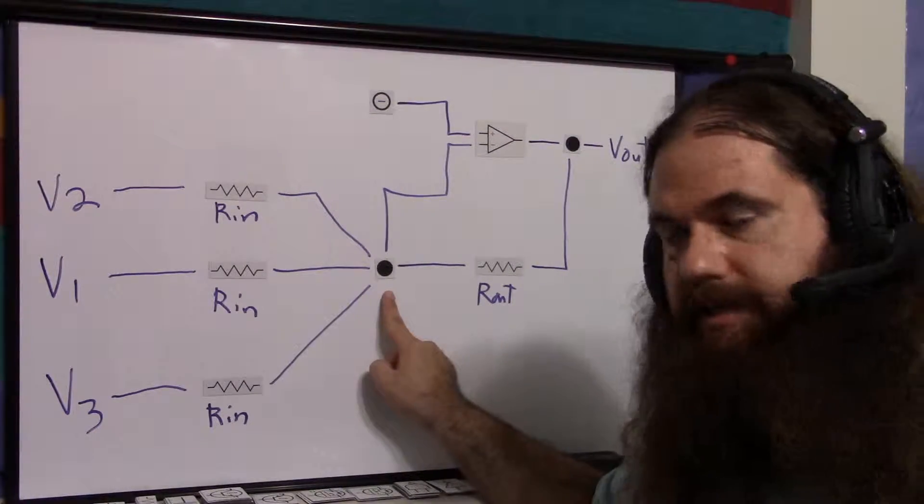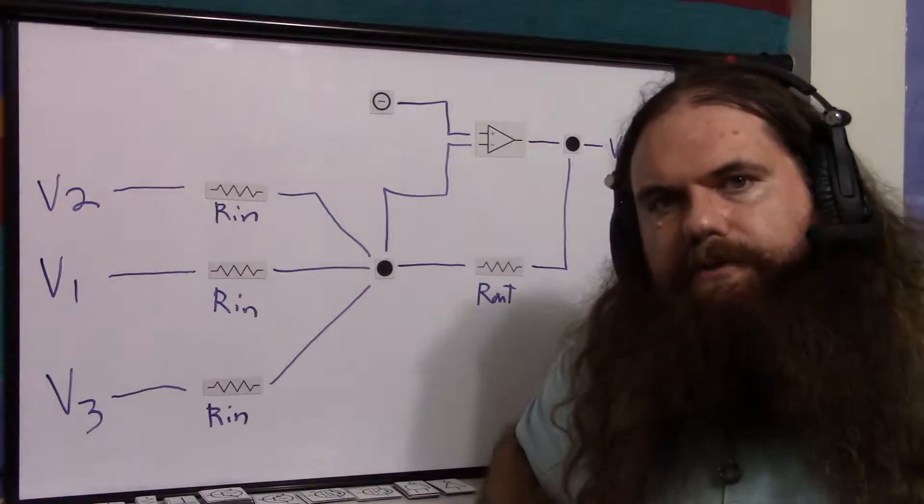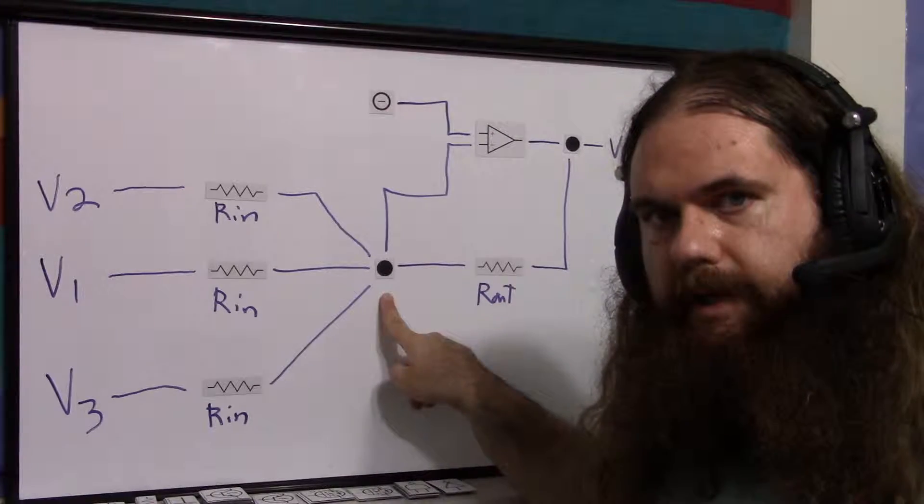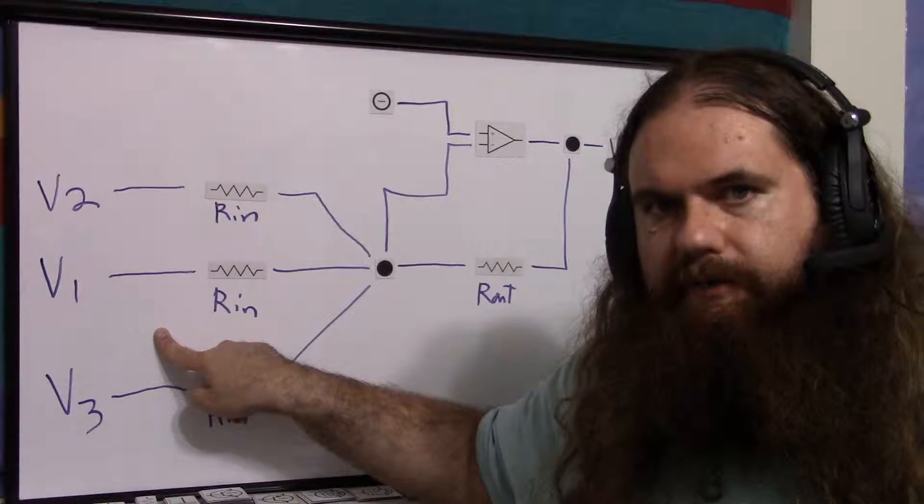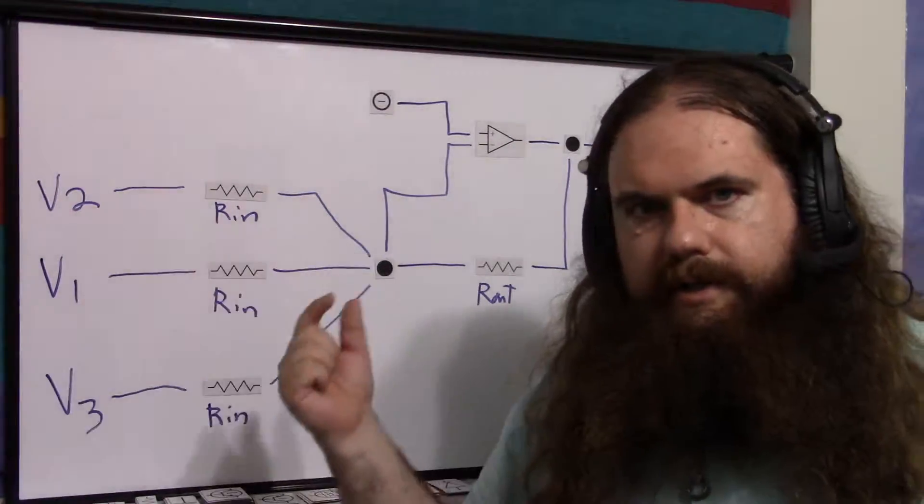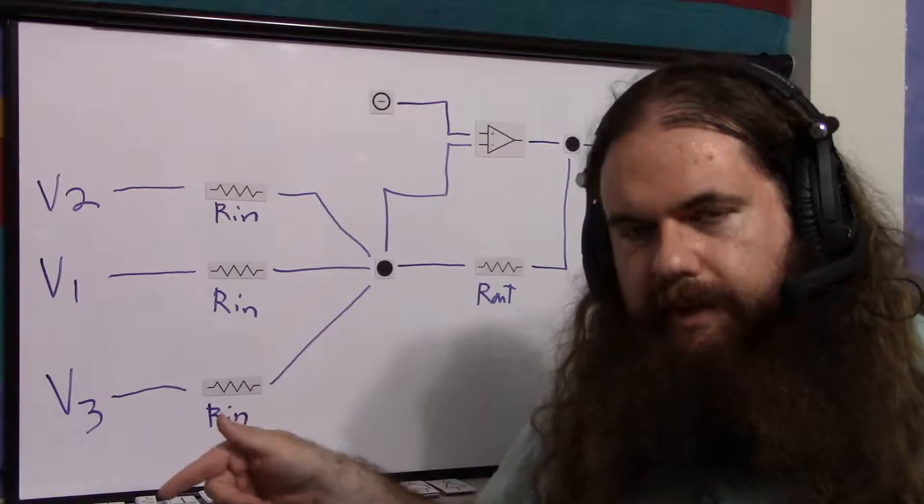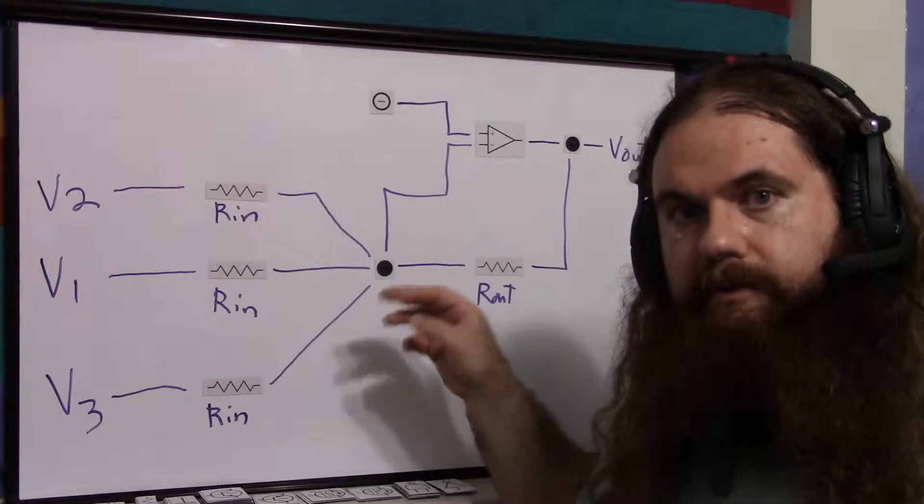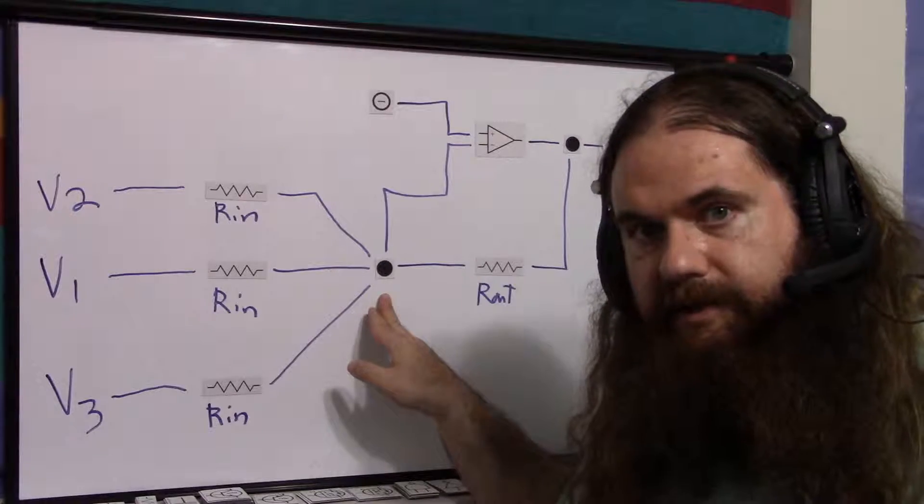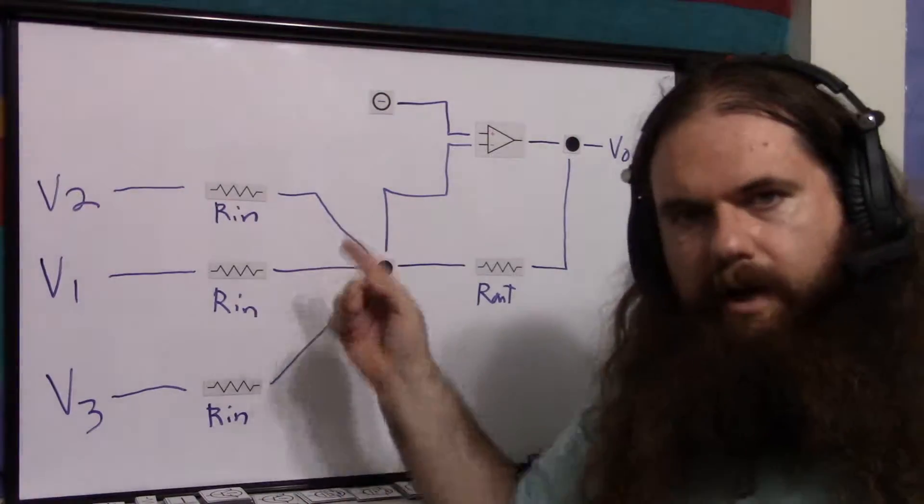This is still going to be zero because we've got zero here, and the feedback is going to make this a zero summing point. This is the first reason that the inverting version is better for a multi-input setup. This being zero here means that these inputs are effectively isolated from each other. If V whatever is higher than zero, then current is going to flow out of it, as you would expect. If V whatever is negative, then current is going to flow into it, as you would expect, because this is zero. Well, a sliver off of zero. It's close enough to zero to make it not matter.